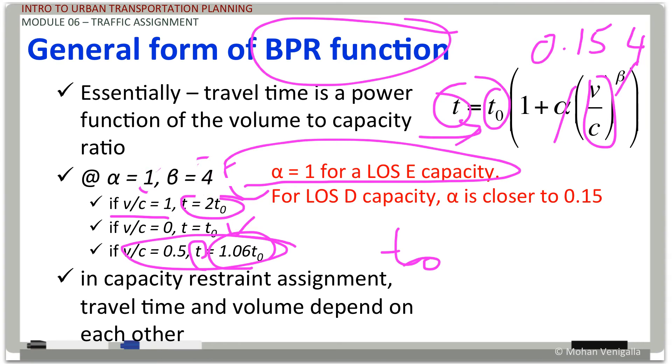That's when alpha is 1 and beta is 4, and that is for a level of service E. These two values I just mentioned, alpha 1 and beta 4, they correspond to a level of service of E. And if you want to use level of service D as your criteria, use 0.15 for alpha. And that's the BPR function. This is the easiest of all the travel time functions, and believe me, bazillion research papers are there on this.